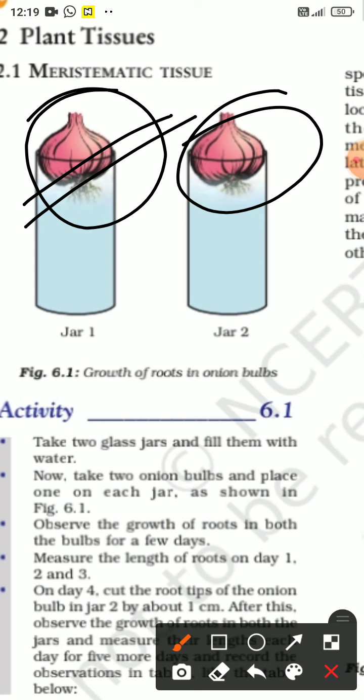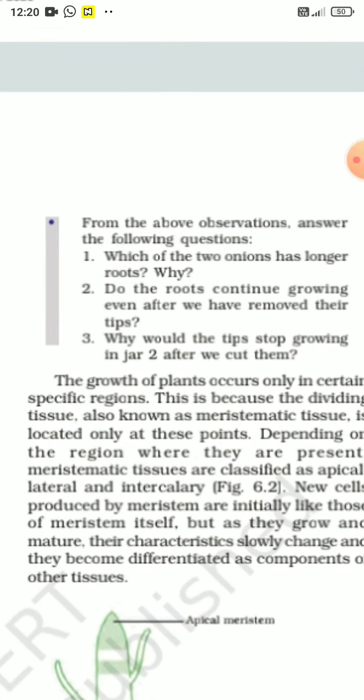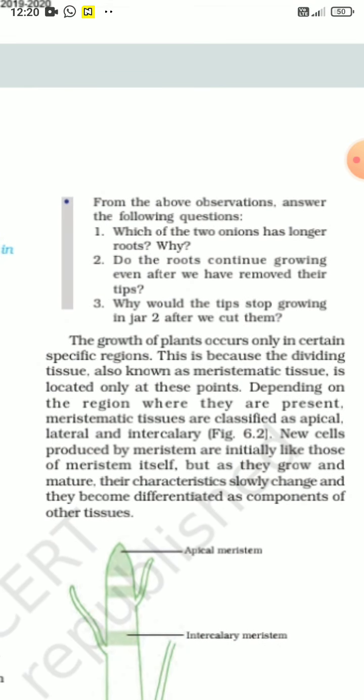Now, if we add onions into the plants, then what will happen? The roots arise from there. We have cut the specific space. Now, we will talk about the growth. So, what will happen? Root growth will not happen. The growth of plants occur only in certain specific regions.